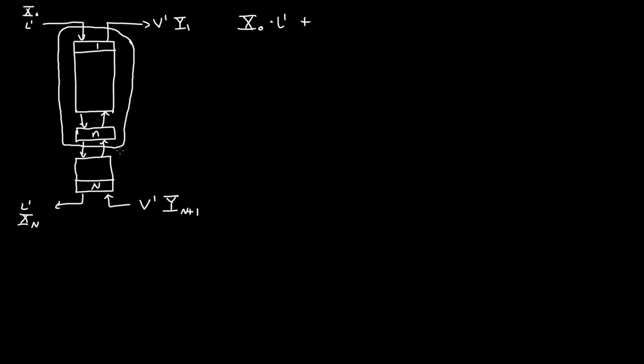Plus this which is v prime times y n plus 1. So n plus 1 times v prime is equal to what's going out. And that's v prime times y1 plus this which is xn times l prime. Now let's solve this for y1.